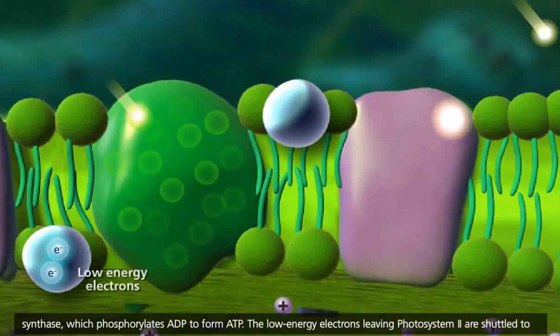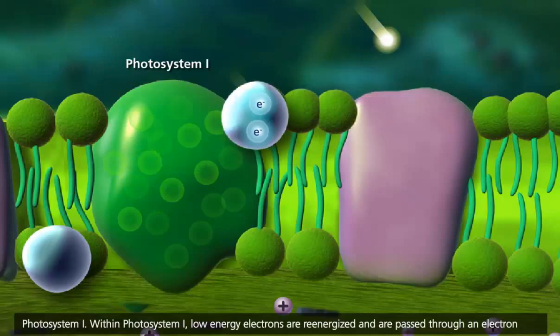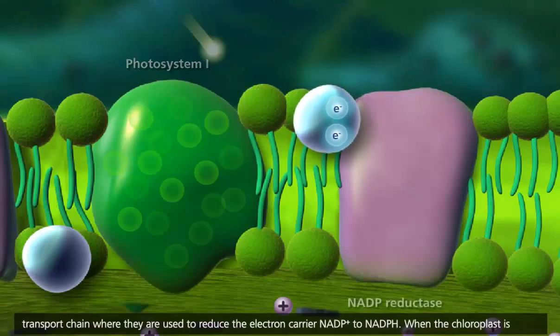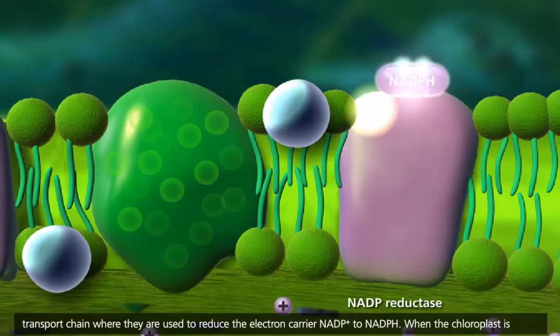The low energy electrons leaving photosystem II are shuttled to photosystem I. Within photosystem I, low energy electrons are re-energized and are passed through an electron transport chain where they are used to reduce the electron carrier NADP plus to NADPH.